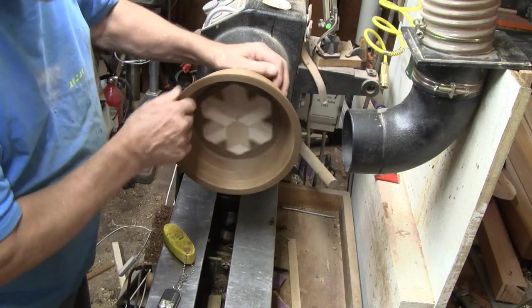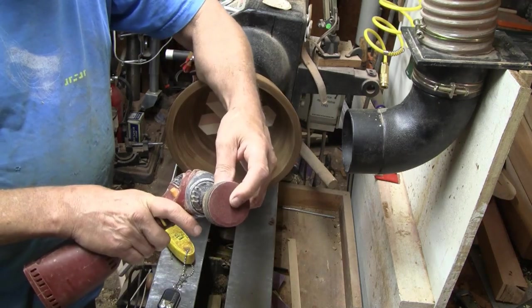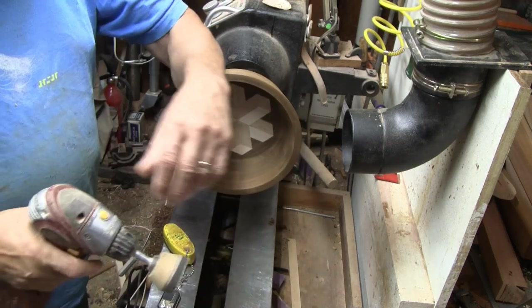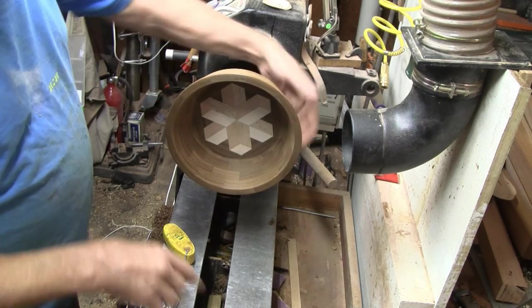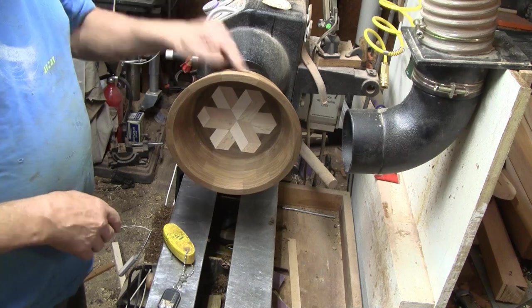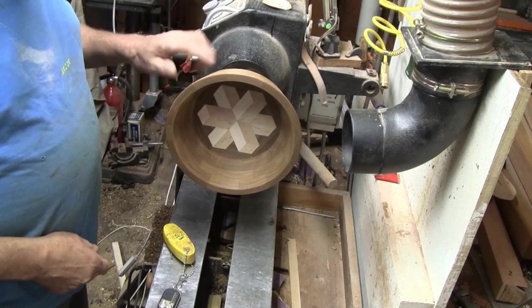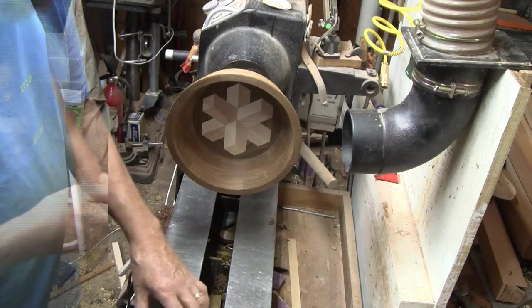I'm all ready to sand, and this should be very easy. I'll start with a 2 inch disc 100 grit, work my way through 400. On the inside, I'll have the lathe running forward at about 400 RPM. When I do the outside, I'll have it at 400, turning in reverse. I'm going to get my dust collector going.